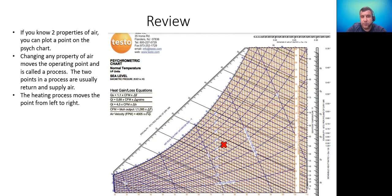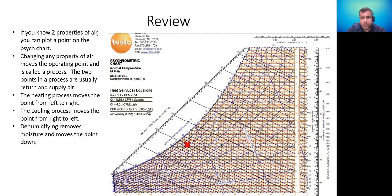The heating process moves the point from left to right, so whenever we see a line going from left to right, we are strictly heating. The cooling process moves from right to left, the opposite direction. Dehumidifying removes moisture and moves the point down. Cooling and dehumidifying will be a combination of moving to the left and moving the operating point down.